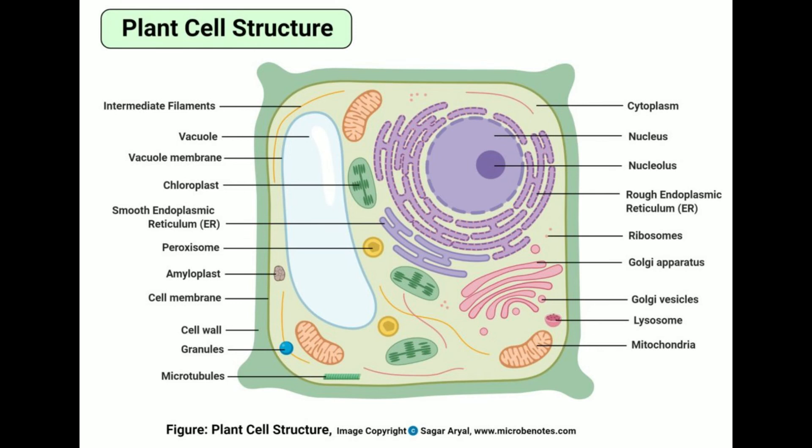Protists: Protists are unicellular eukaryotes that are primitive when compared to plant or animal cells. Most protists don't have a cell wall, though some might. Many protists are known to have chloroplasts containing chlorophyll, while others may have other photosynthetic pigments. Protists are also known to have cilia and flagella that assist in cell movement.